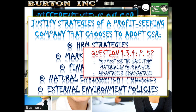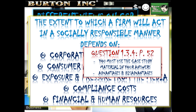The extent to which a firm acts in a socially responsible manner depends on several factors: corporate culture and attitudes towards CSR, consumer awareness of and concerns for CSR issues, exposure and pressure from the media, and short-term versus long-term perspectives. In the short term, CSR practices can eat into profits due to higher implementation costs, but companies that are socially responsible have better long-term prospects. There are also increased compliance costs in terms of financial and human resources.